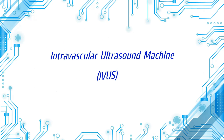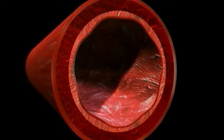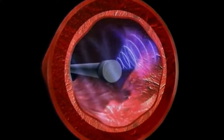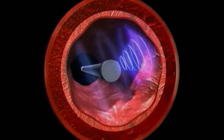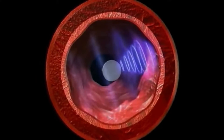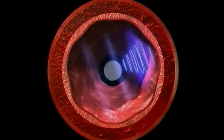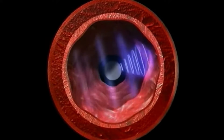Let's start with the intravascular ultrasound machine, also known as IVUS. Intravascular ultrasound, or IVUS, is also known as endovascular ultrasound or intravascular echocardiography. It uses a transducer, or probe, to generate sound waves and produce pictures of the insides of blood vessels.